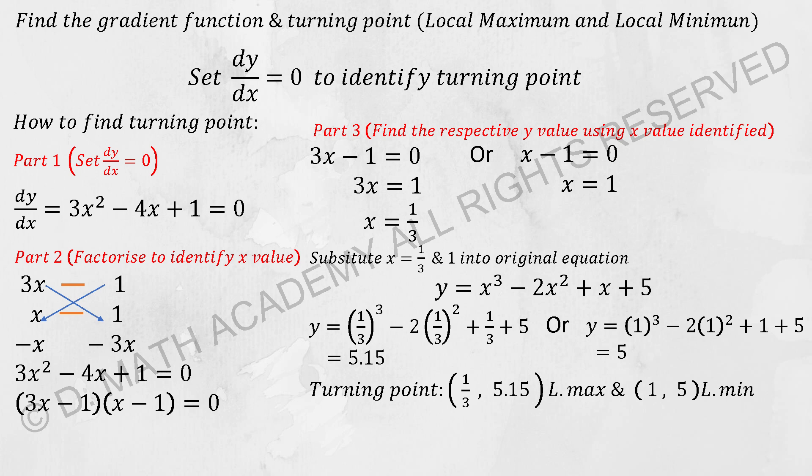So the turning point local maximum will be (1/3, 5.15) and the local minimum will be (1, 5). That's it for this particular chapter.